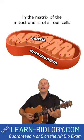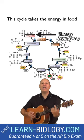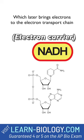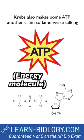In the matrix of the mitochondria of all our cells is the cycle of reactions that won Krebs the Nobel Prize. The cycle takes the energy in food and makes it into other forms your cells can use. Krebs cycle makes electron carrier NADH, which later brings electrons to the electron transport chain. And Krebs makes FADH₂ — its function is the same. Krebs also makes ATP, another claim to fame when talking Krebs.